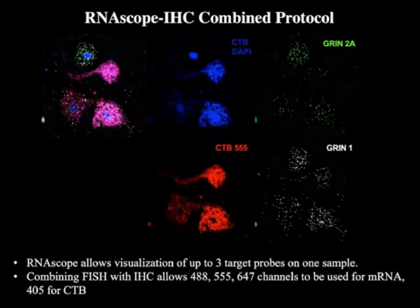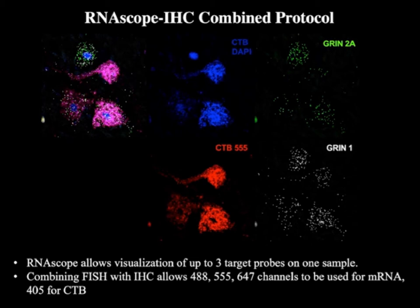With the manual fluorescent V1 assay, we can test up to three target probes in the same cells. Since the CTB488 signal limits us to two channels, we also tested using immunohistochemistry to label unconjugated CTB tracer with an antibody, and CTB conjugated with Alexa 555. This design resulted in reliable labeling of our target mRNA without compromising the signal, and would also allow us to test up to three target probes in labeled phrenic motor neurons.